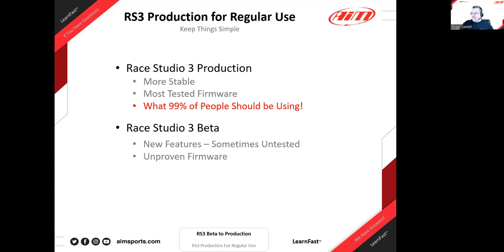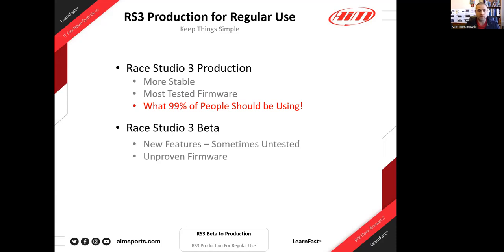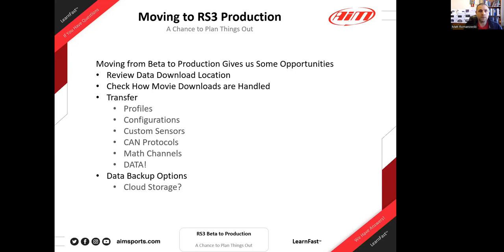99% of people should really be in production — it has production firmware, fully tested features, and everything you want. Beta is for the small percentage of people who want to be on the cutting edge and are okay with potentially untested features that could cause problems. Firmware updates and all stable features belong in production, and that's why we want to move everyone there.